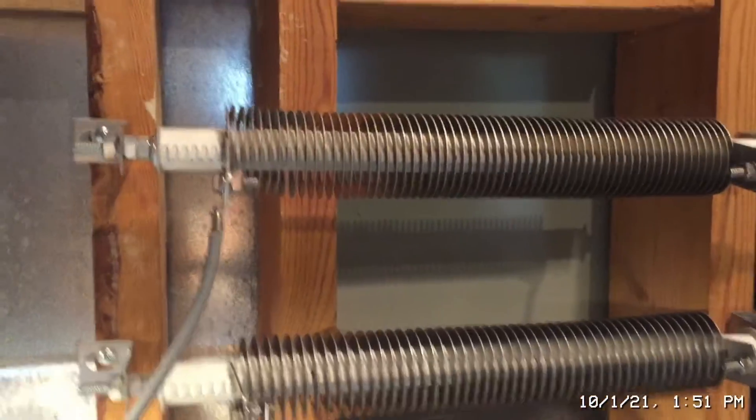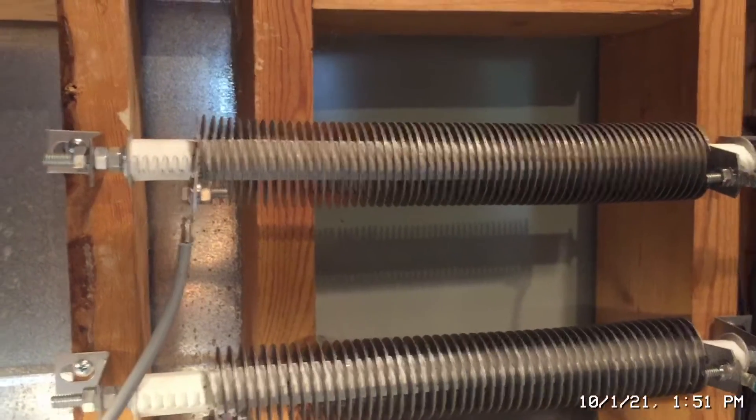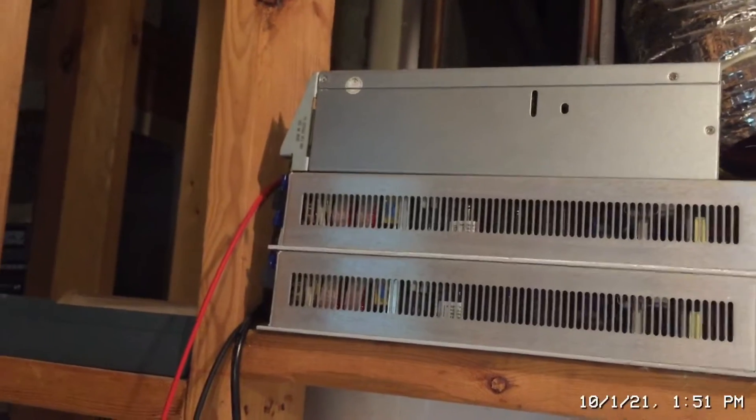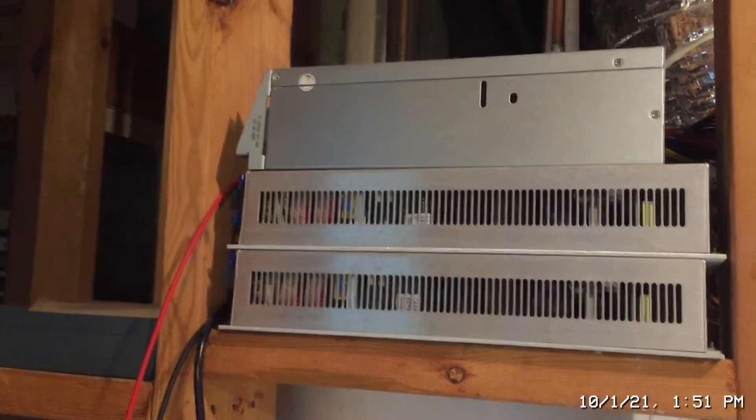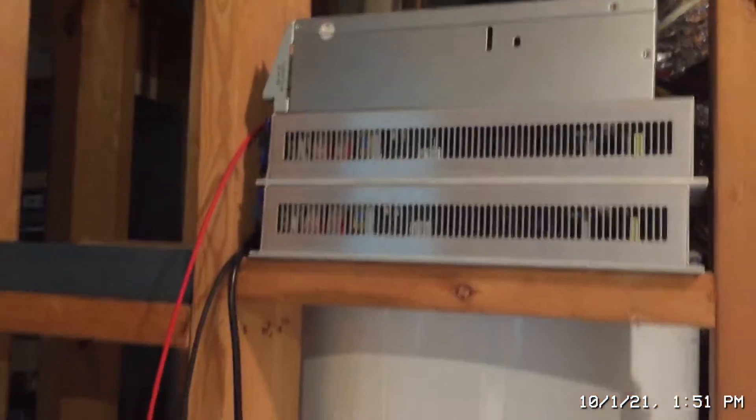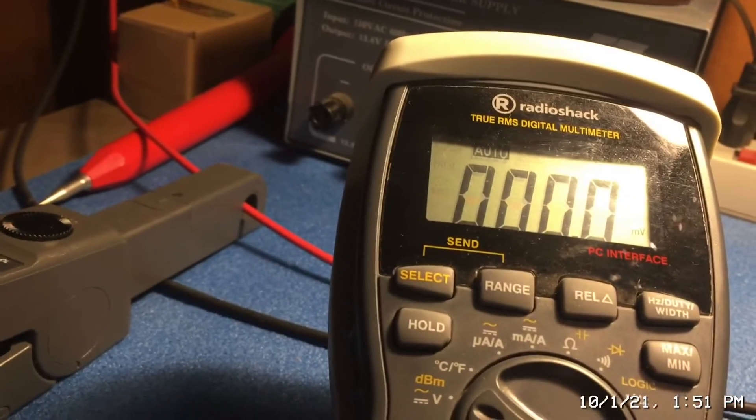So basically what I'm going to be demonstrating here is I've got these 2,000 watt loads and I've got two 50 volt power supplies up there in parallel. And I'm going to set the normal current to around 33 amps or so so we'll be able to measure that here.